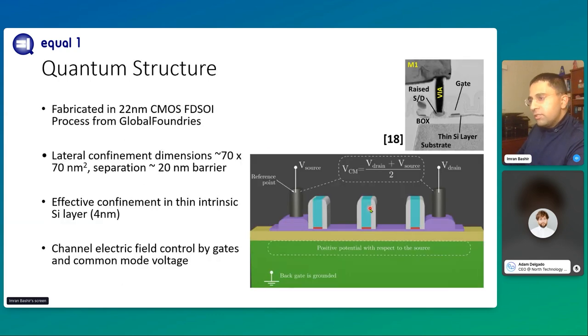The quantum structure is designed using similar materials for FDSOI transistor. In this case, we're using 22 nanometer FDSOI process from Global Foundry. The quantum dots are dimension 70 by 70 nanometer in this region and in this region. And they're separated by barrier gates, which are 20 nanometer wide, shown by this blue region. And the electron is confined in a thin silicon film in between the gates in this region. So this is an example of a two quantum dot or two qubit system. And then we control these gates electrostatically with voltage or the voltage, common-mode voltage applied on the source and the drain.